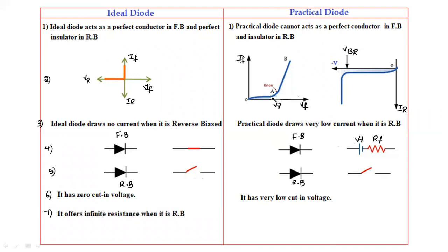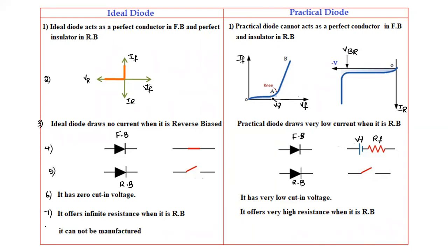The ideal diode offers infinite resistance when it is in reverse bias. Since the current is zero, it offers infinite resistance in reverse bias. In the practical diode, it offers very high resistance when it is in reverse bias — because the current is very low, the resistance is very high but not infinite.